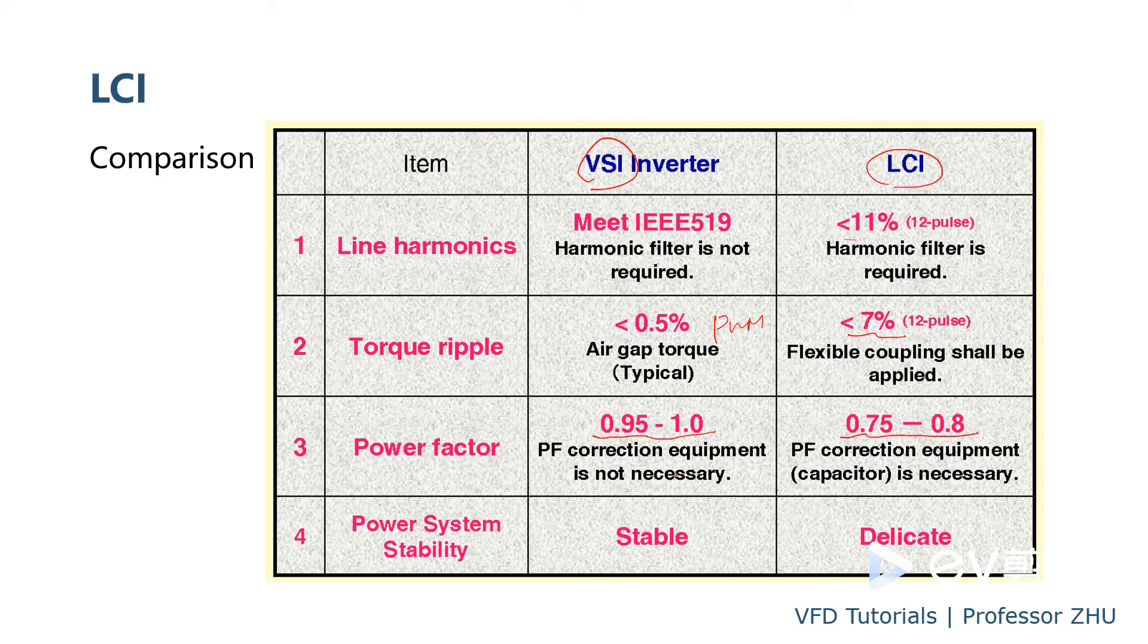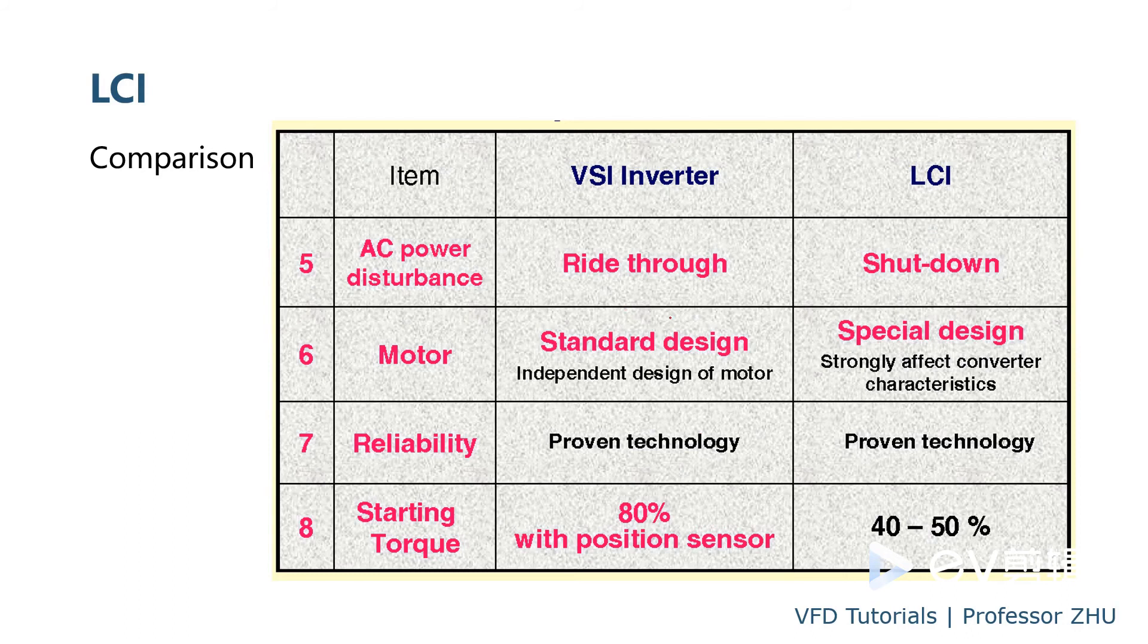And also harmonic is good. Typically VSI will use 24-pulse or 36 or even higher rectifier numbers. But LCI typically is 12-pulse maximum. So still very high harmonic, cannot meet the IEEE standard. So you need a harmonic filter or power factor correction. And torque ripple, VSI uses PWM technology. So output current waveform is very good, very sinusoidal. But this one is a trapezoidal waveform. So the torque ripple is very high. Power factor, as we said, because of the diode rectifier. And this one, SCR rectifier, because of the lagging of the current on the input side. So power factor is also low.